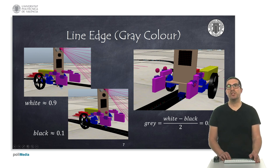And we will use this value as a reference to track the line. So, the goal is that the robot is always on the edge of the line, and any deviation must be corrected.